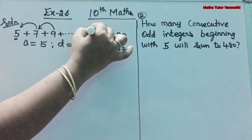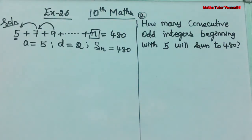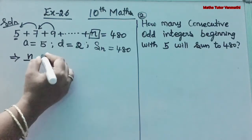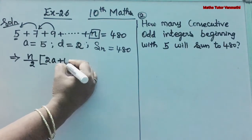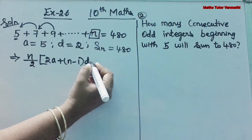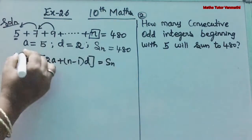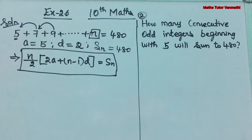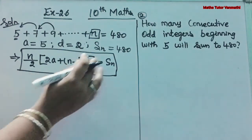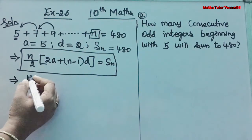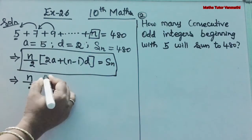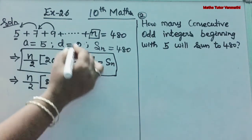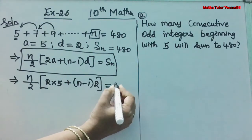Now we are going to find the N value. The formula to find the sum is: SN = N/2 × (2A + (N−1) × D). Substituting the values A = 5 and D = 2, we get: 480 = N/2 × (2×5 + (N−1)×2).